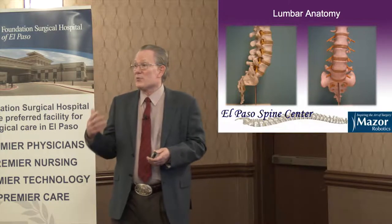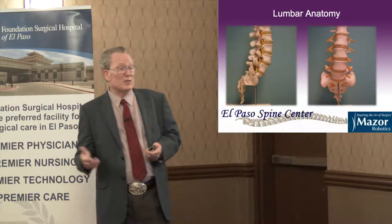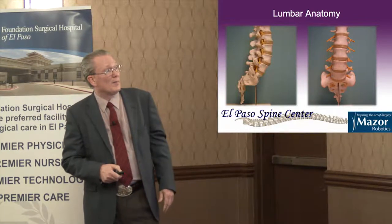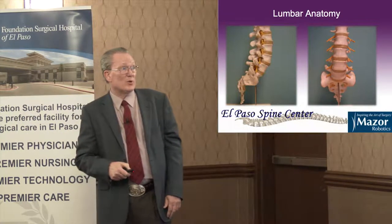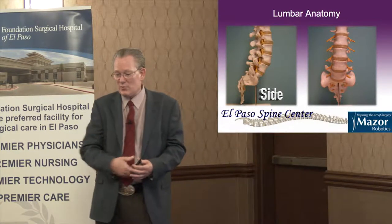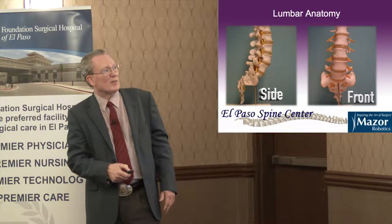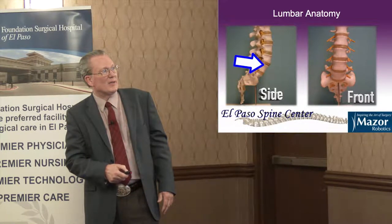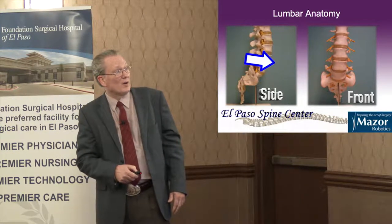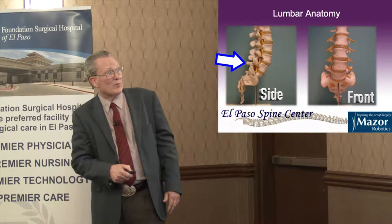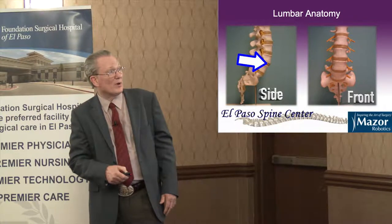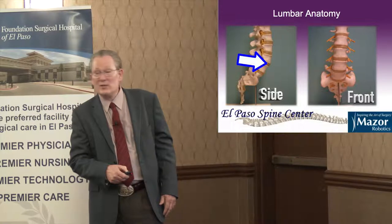I'm going to cover three conditions we treat commonly with this approach, but first let me go over the anatomy. Here we're looking at the lower back from the side and from an AP view through the stomach. You see the bone, the disc, and where the nerves are. Classically we would make an incision in the back, remove all the bone, move the nerve aside to get to the disc. Now, if it's pinched right there, you go right to that spot and pull the disc away.